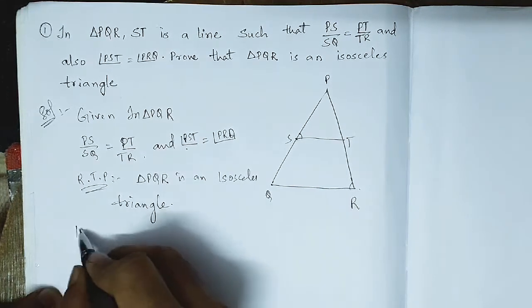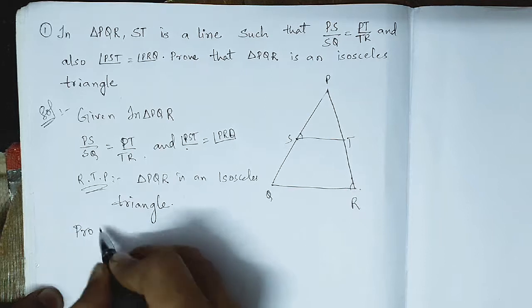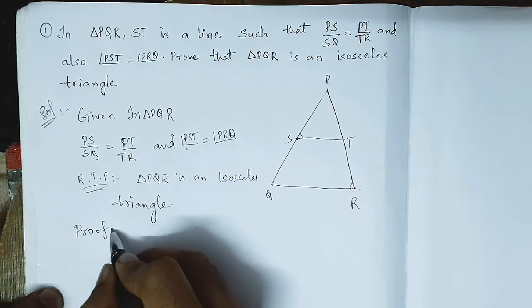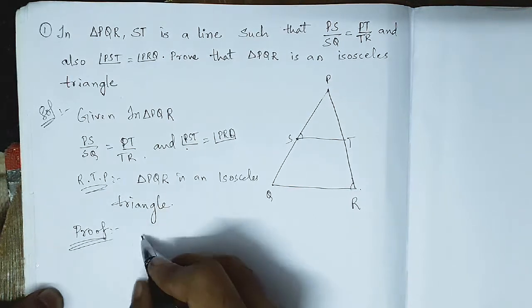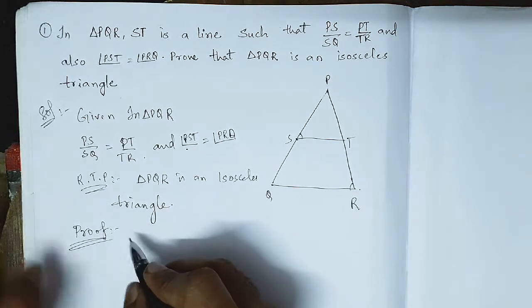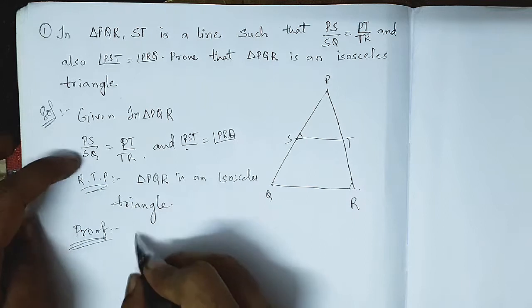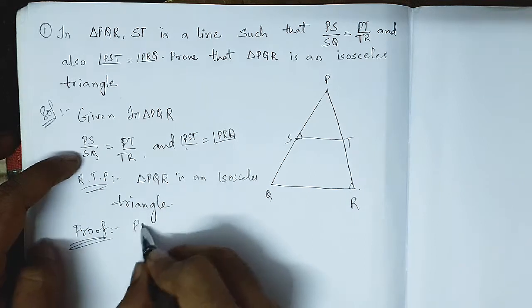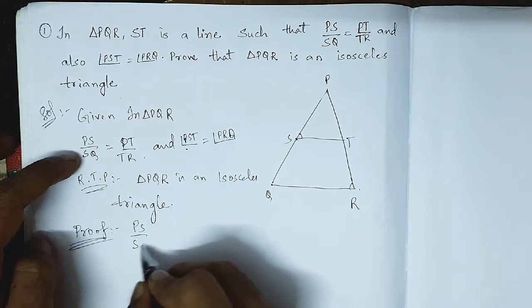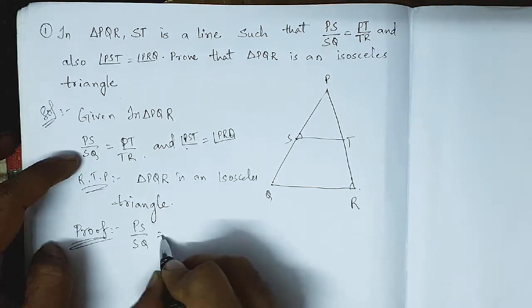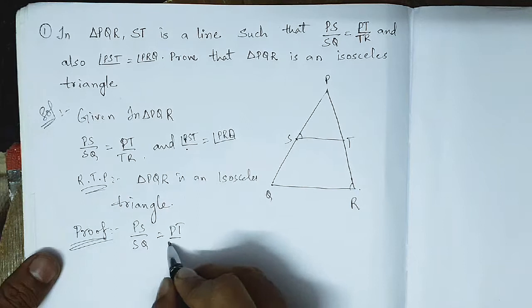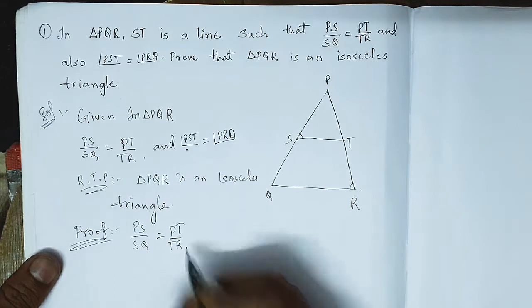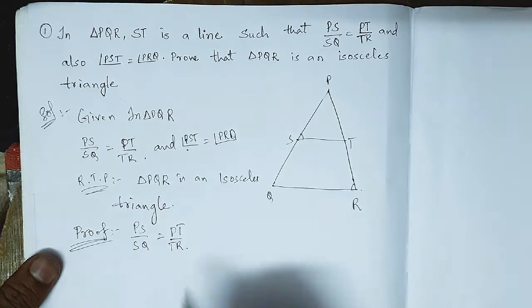Next is the proof. In the proof, we will write what is given. Given is PS by SQ equals PT by TR.